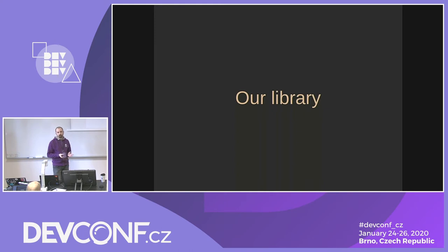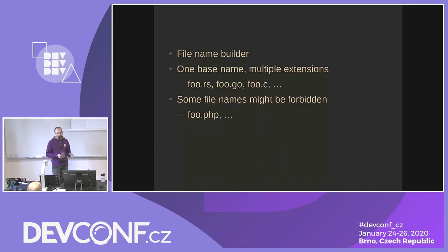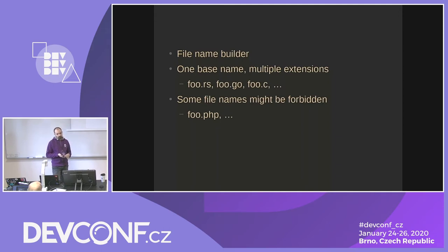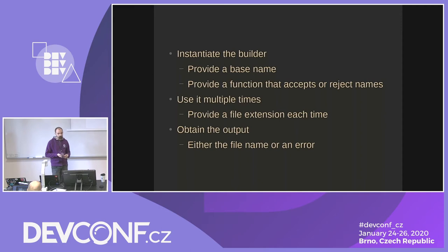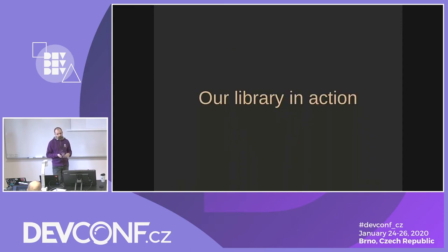We have a library used as an example throughout the presentation — a filename builder. You provide a base name for the file and can have multiple extensions, for example foo.rs.go.c. You can also decide that some filenames are not acceptable, like foo.php — we don't want that. The library is instantiated by providing a base name and a filter callback function, then used multiple times each with a different file extension, returning either a full filename or an error.